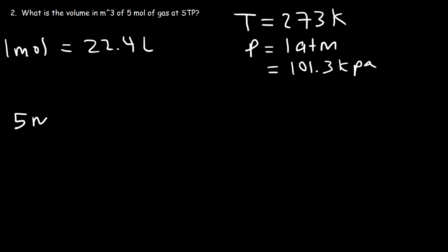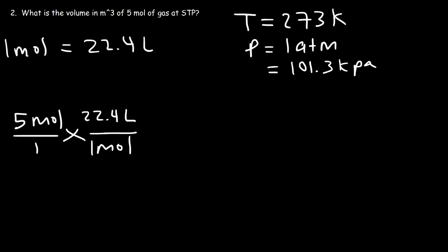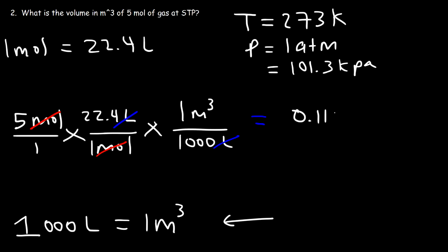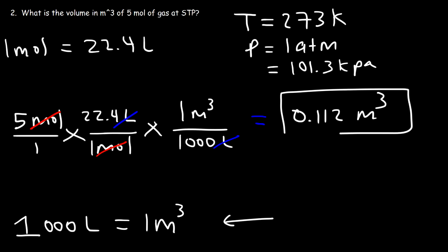In this problem we have 5 moles of gas, so we convert to volume in liters: 5 moles × 22.4 liters per mole = 112 liters. Then we convert liters into cubic meters, knowing that 1,000 liters equals 1 cubic meter: 112 divided by 1,000 gives 0.112 cubic meters. That is the volume in cubic meters of 5 moles of gas.